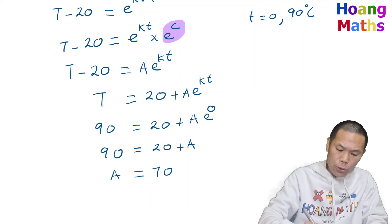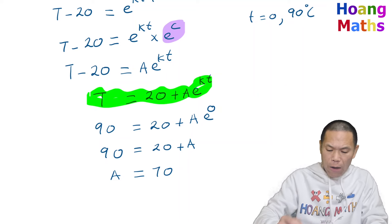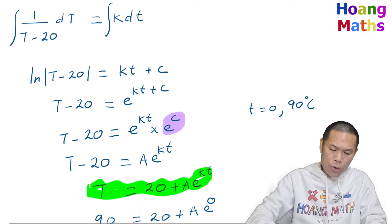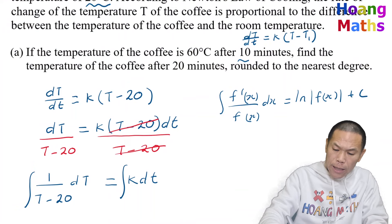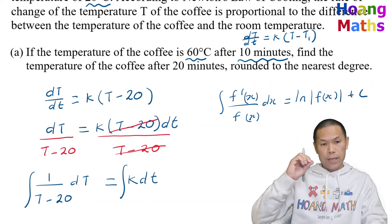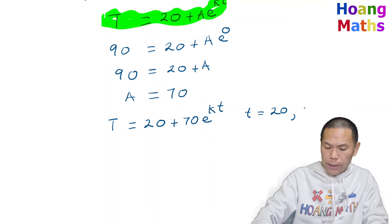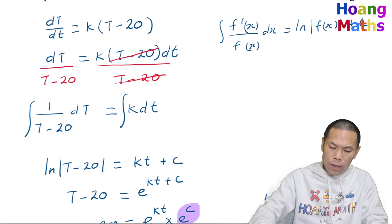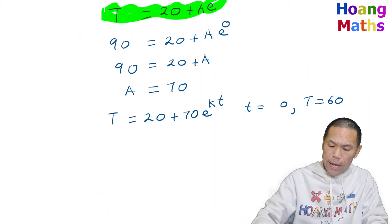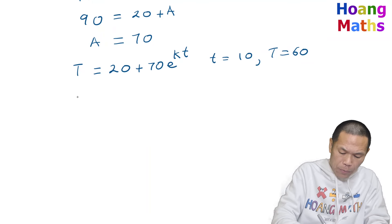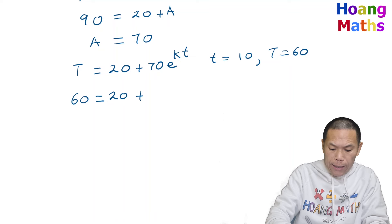Substituting a back into the equation: T equals 20 plus 70·e^(kt). We also know that when t equals 10 minutes, the temperature T is 60 degrees Celsius. So 60 equals 20 plus 70·e^(10k). Moving 20 to the other side: 40 equals 70·e^(10k). Dividing by 70: 4/7 equals e^(10k).